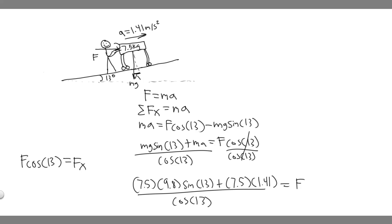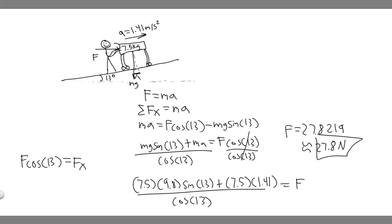Plugging in: 7.5 times 9.8 times sine of 13, plus 7.5 times 1.41, all divided by cosine of 13. When you compute that, you get F equal to approximately 27.82 newtons. So rounding to 27.8 newtons — that's the magnitude of the horizontal force, and that's your answer to this problem. Hopefully you found this useful.